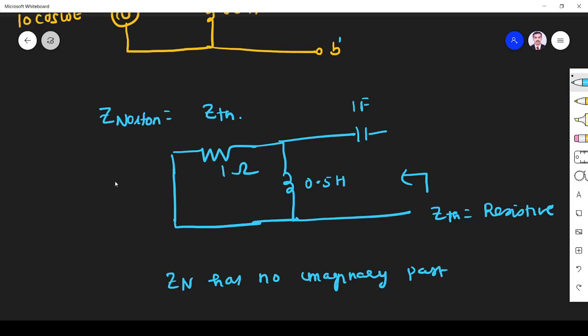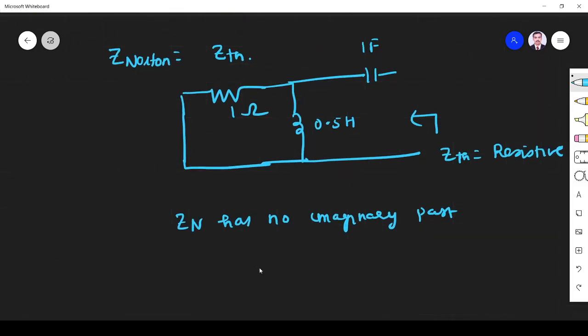So Z_N has no imaginary part. That means when you get the Z_N value, equate the imaginary part of Z_N equal to zero. From this we can find the ω value. So that is the logic we are going to use to solve this problem. Now we will see Z_equivalent or Z_Norton.